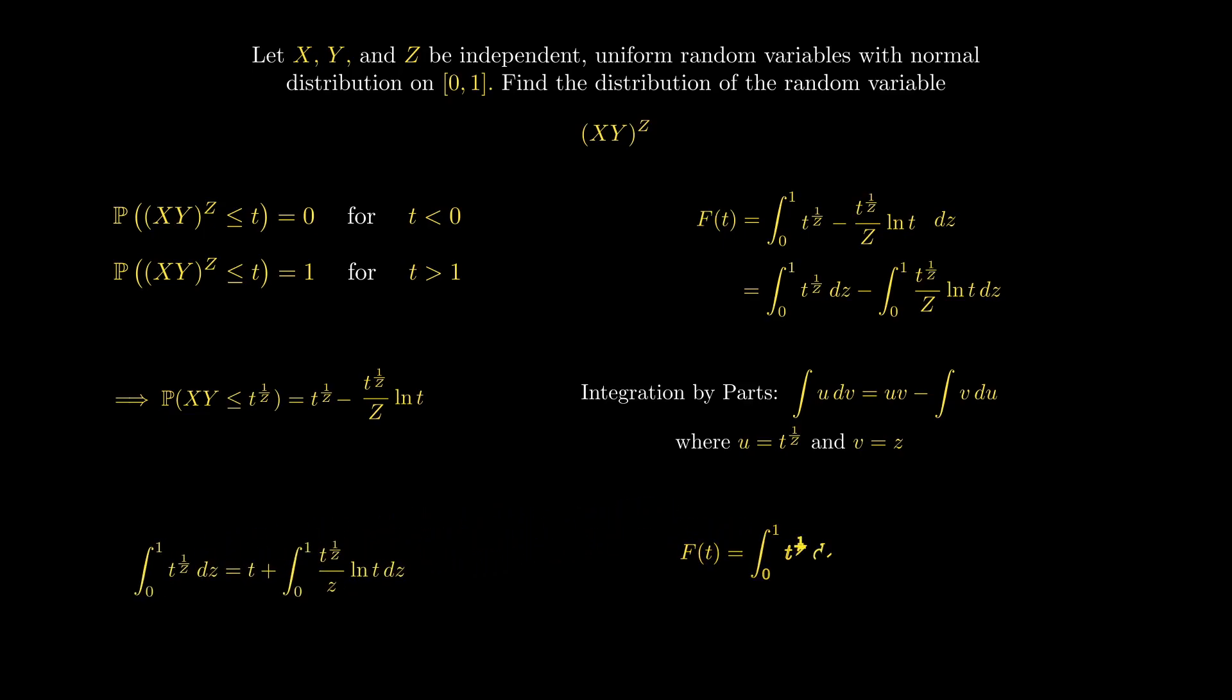Let's plug in this expression into our equation for the cumulative distribution function. You can see that the two integrals on the right cancel out, leaving us with just t. So, F(t) is equal to t, which means that (XY)^Z must be a uniform random variable.